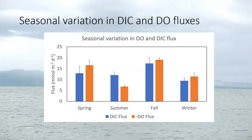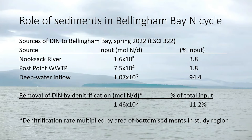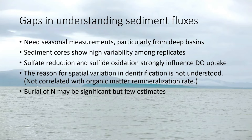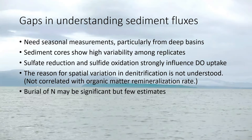To better understand this relationship, we measured the dissolved organic carbon flux and the dissolved oxygen flux at one station over the course of the year. Almost 95% of the nitrogen supplied to Bellingham Bay is from deep water inflow, about 4% from the Nooksack River, and less than 2% from the wastewater treatment plant. Sediment cores show high variability even among replicates — these cores are eight centimeters in diameter, and we're drawing conclusions about the main basin of Puget Sound from tiny sections of sediment. It's not clear what is driving the variation in denitrification, and there are some estimates of burial of nitrogen that may be significant.